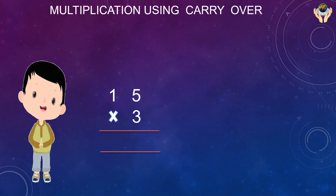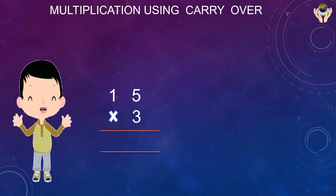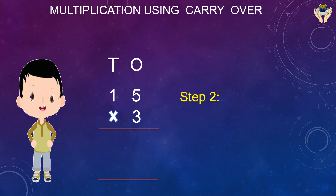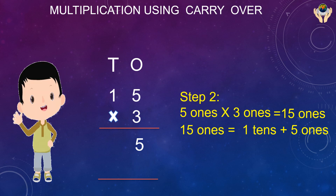Multiplication using carry over — now we are going to do the multiplication of 15 and 3. Step one: write the numbers in ones and tens positions. 15 has five ones and one ten, and 3 has three ones. Now multiply the ones first: three ones times five ones — we repeatedly add three five times, giving 15. We write five at the ones place and carry one to the tens place.